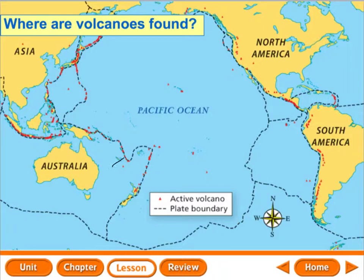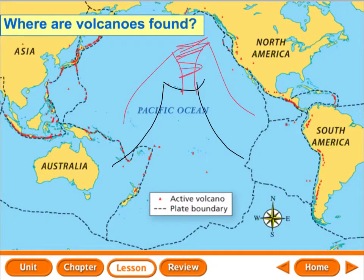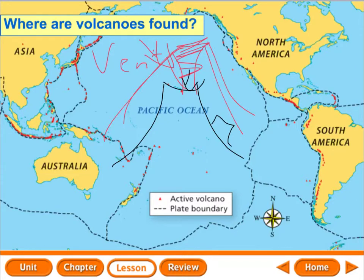All volcanoes have at least one vent — that's the opening where the lava comes out. Some may have two, and some have vents on the sides as well. Over time, lava, ashes, and gas erupt through the vent and form a cup-shaped depression around the vent, and that's called a crater. The crater is usually found at the top of the mountain.